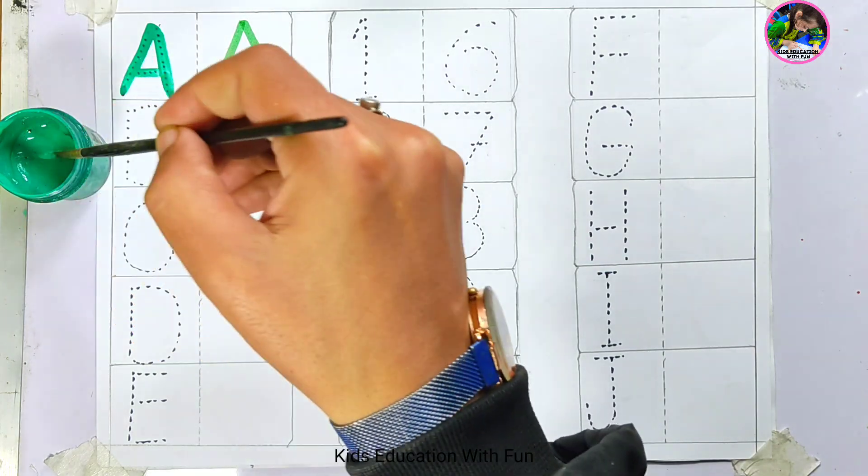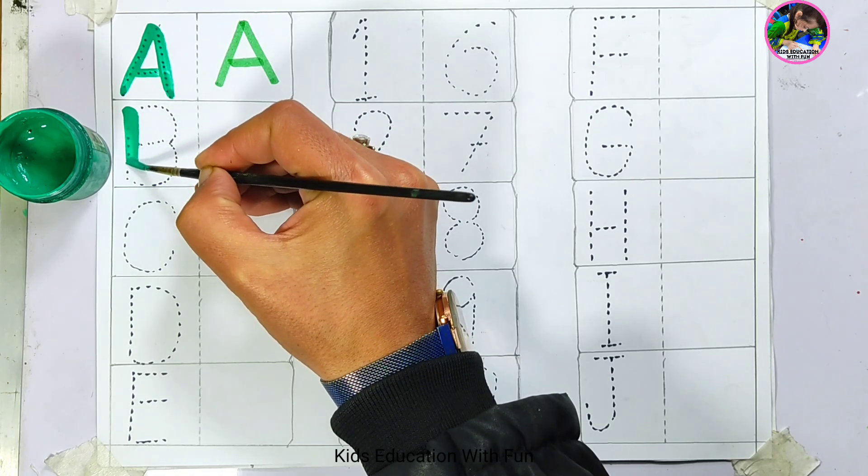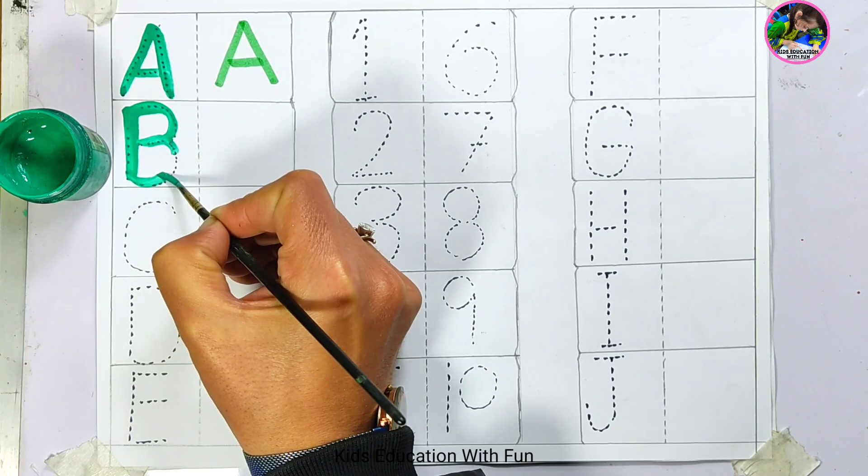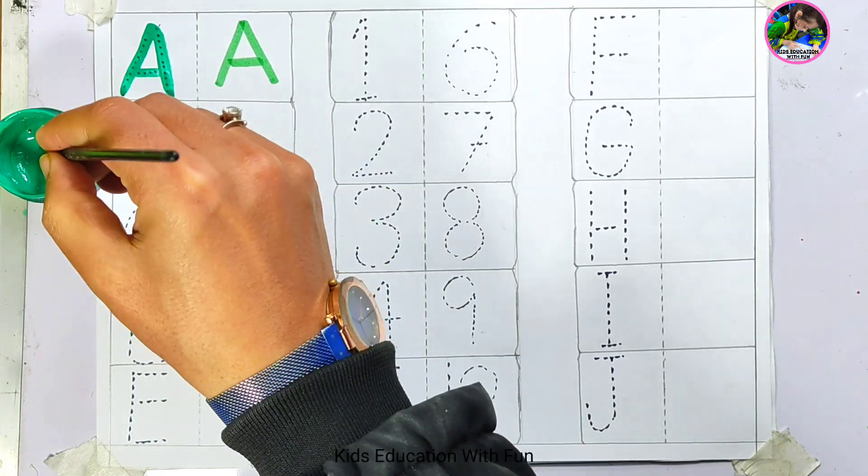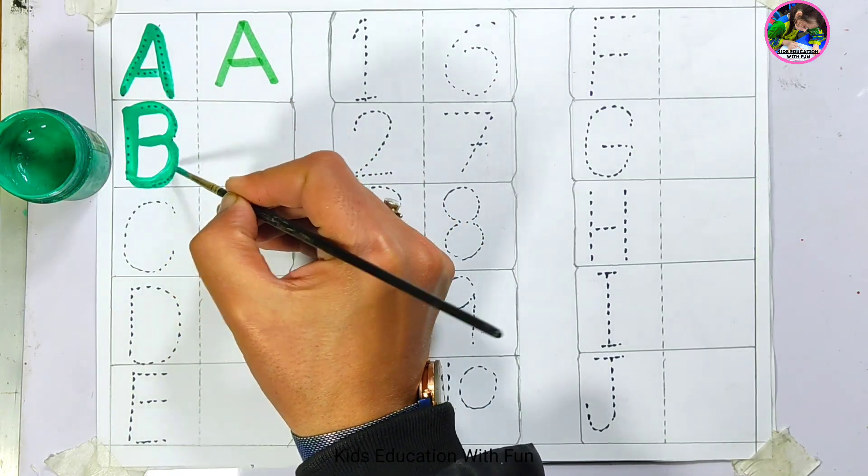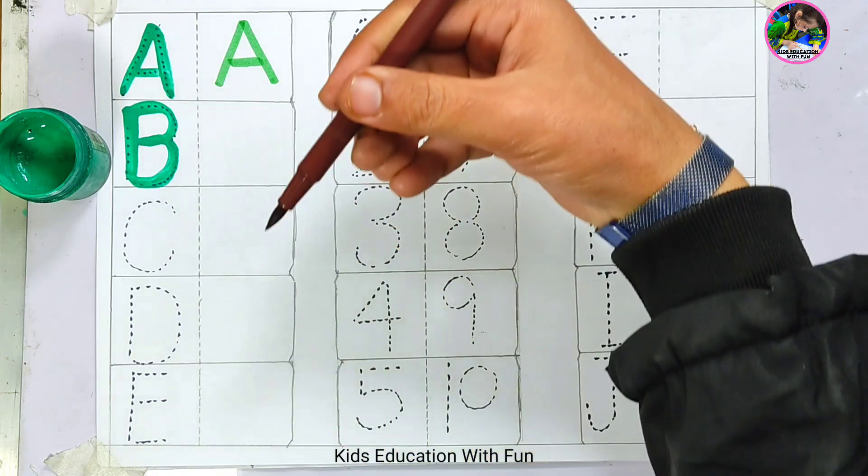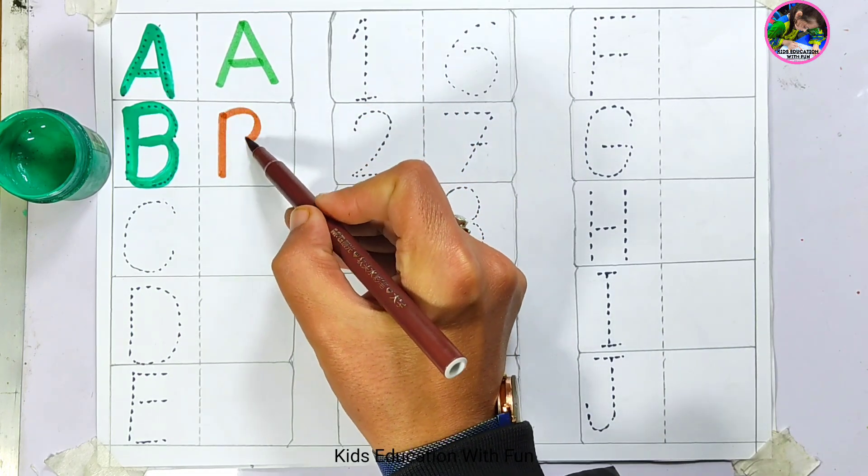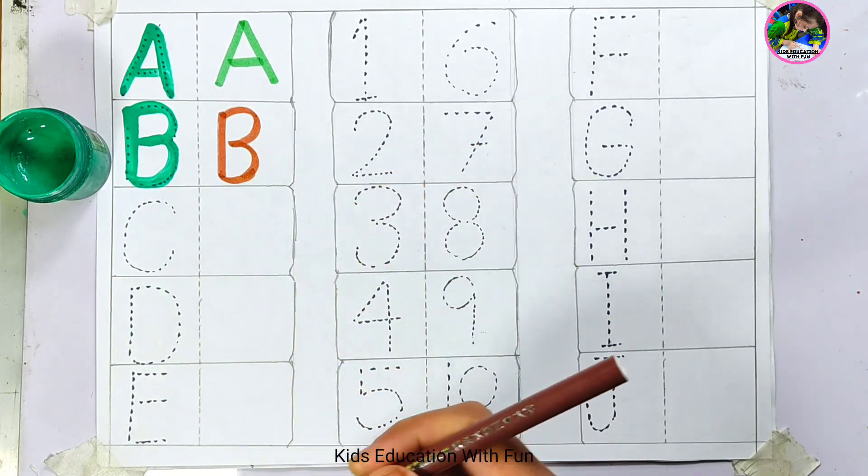Letter B. This is letter B. B is for banana. Letter B, B is for banana. Banana is a fruit. Brown color. Letter B. This is letter B. B is for banana.